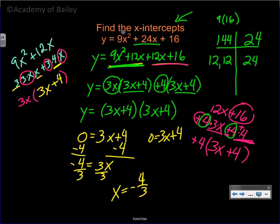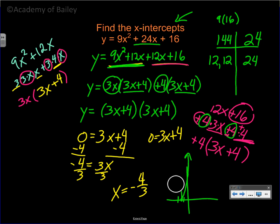For a quick sketch: negative 4 thirds is the x-intercept. Since a is positive the parabola opens up, and since a is 9 it's fairly narrow. The parabola sits right on the x-axis at negative 4 thirds, which means there is only one root — a double root at negative 4 thirds.